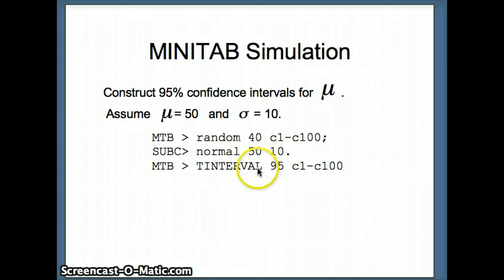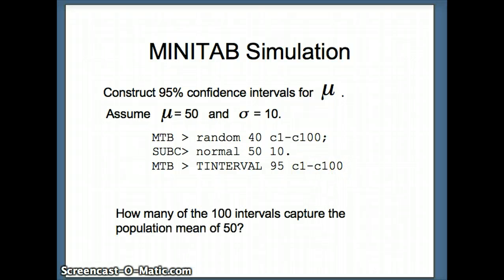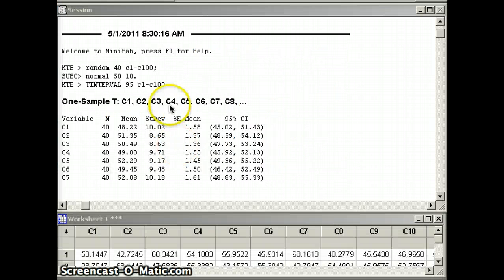The command we're going to use here to construct confidence intervals for μ is t-interval. So the t-interval is one of the intervals we can use for μ. 95 is going to correspond to our 95% confidence level, again our probability that a given confidence interval will capture the population mean of 50. And then we're going to repeat this 100 times. So we're going to have 100 researchers construct confidence intervals. Each researcher has the same goal: the goal is to capture the population mean, which is 50. Some of them will be right and some of them will be wrong. So we're going to ask the question, how many of those 100 intervals will indeed capture the population mean of 50?